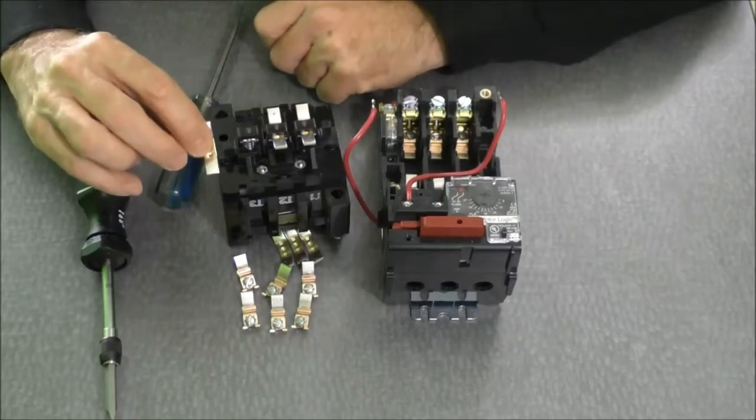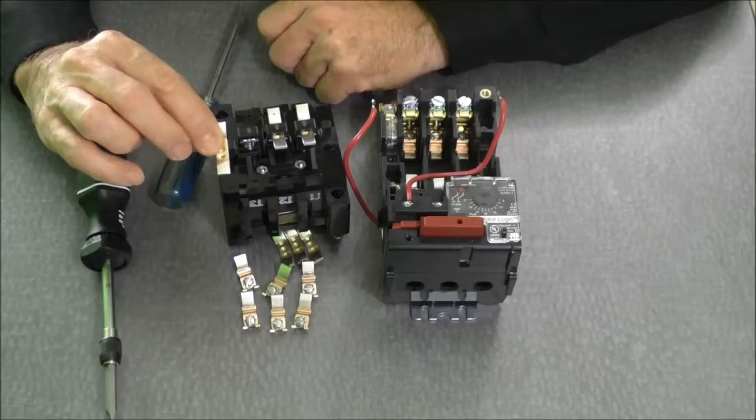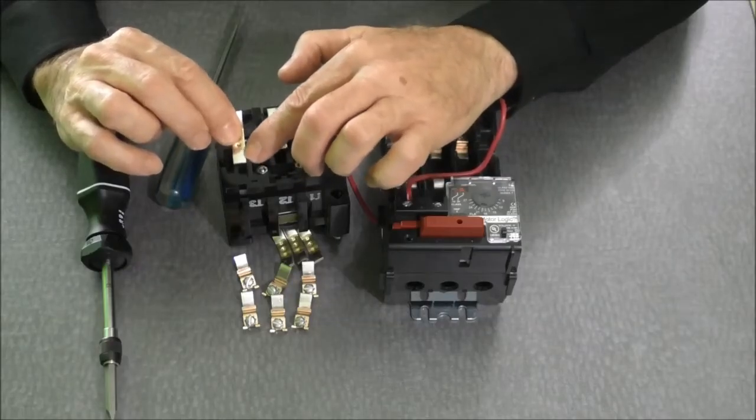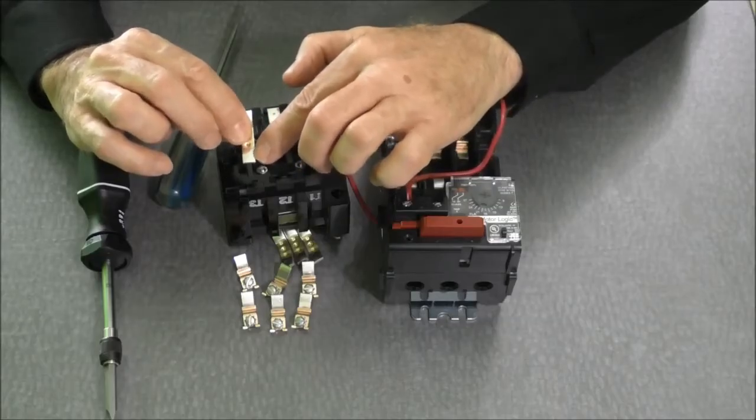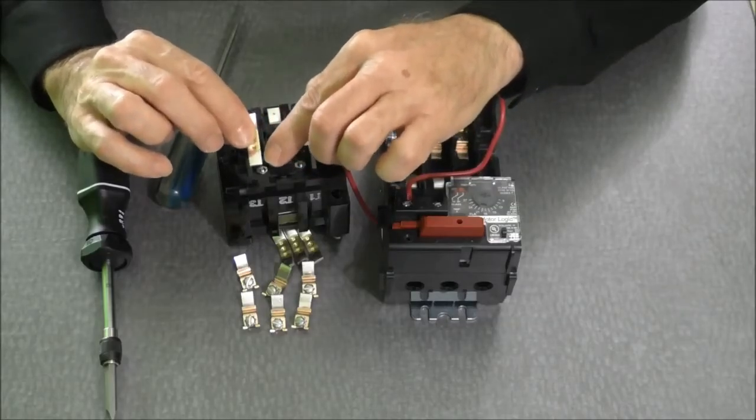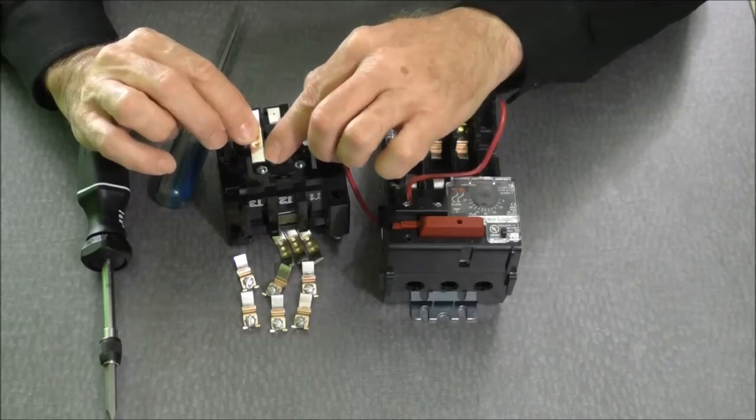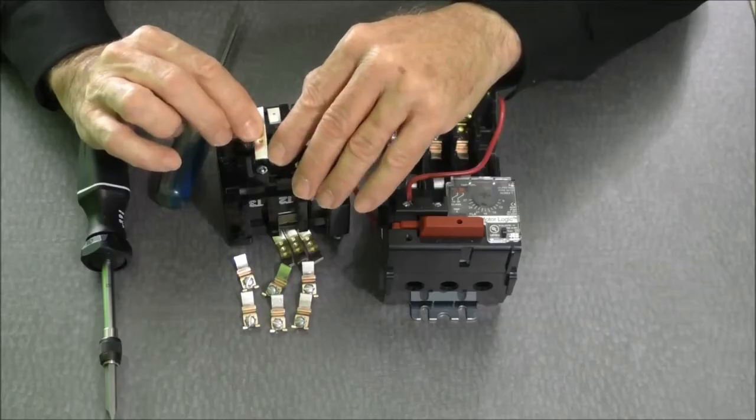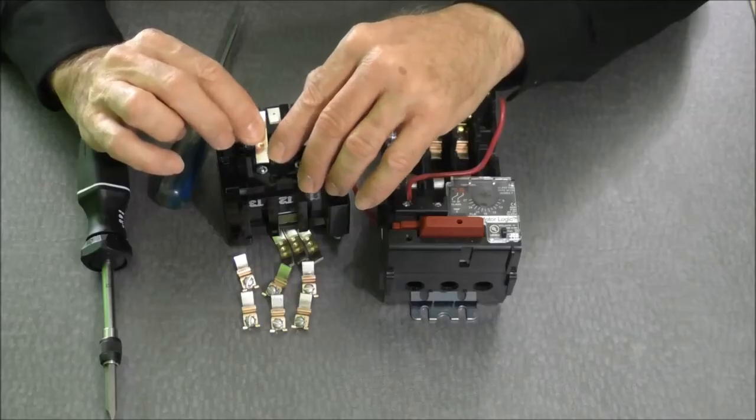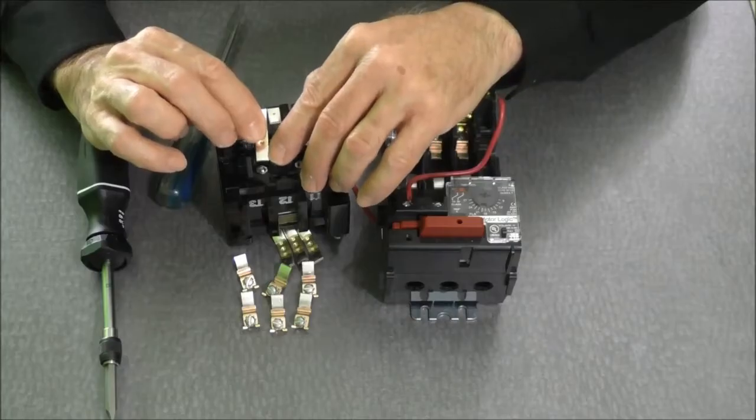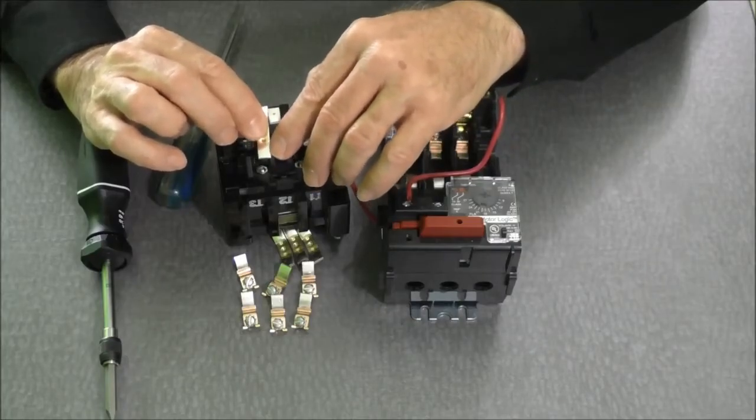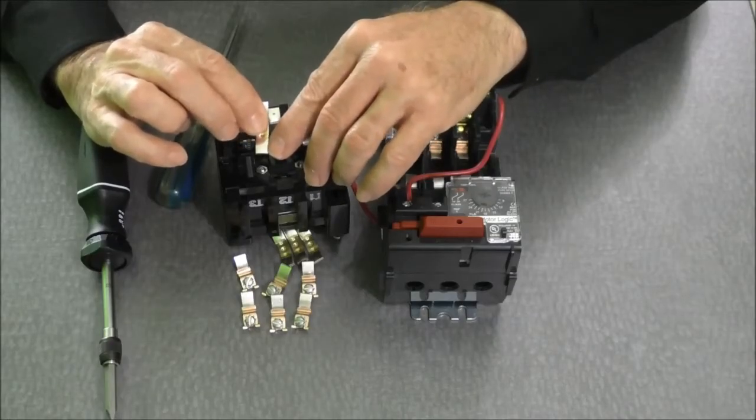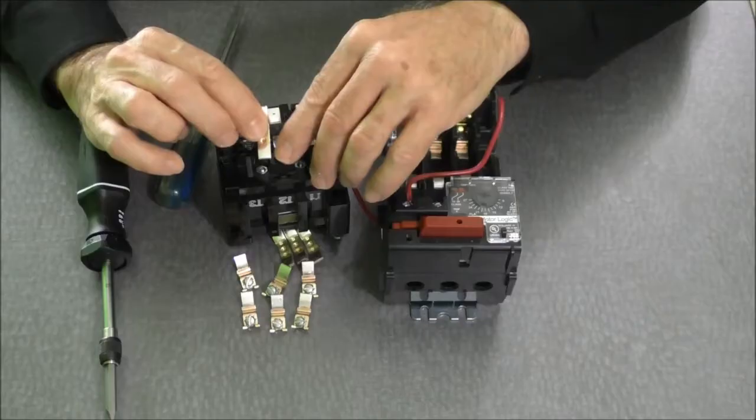These are new contacts. If these were used contacts we would have some pitting and scarring on this face. We would also have some black carbon on the contact surface. That is all perfectly natural. Every time this contactor opens and closes we have a little arc that's created. Every time we have a little arc we wear a little bit of the silver off the contact away. You should never try and polish a contact in a contactor. When you polish them or file them you're purely taking the silver off of the contact tips, removing life from those contacts.